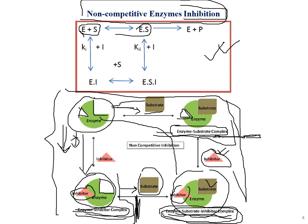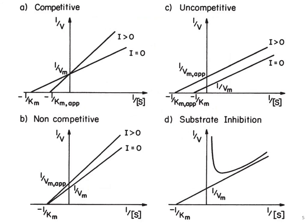From the equation: in the first case, enzyme combines with substrate to form the enzyme-substrate complex; in the second case, enzyme is first attacked by the inhibitor to form the enzyme-inhibitor complex. Then the inhibitor combines with the full complex to form ESI, or in the other case the substrate binds into the active site to form ESI — both of which hinder formation of product.